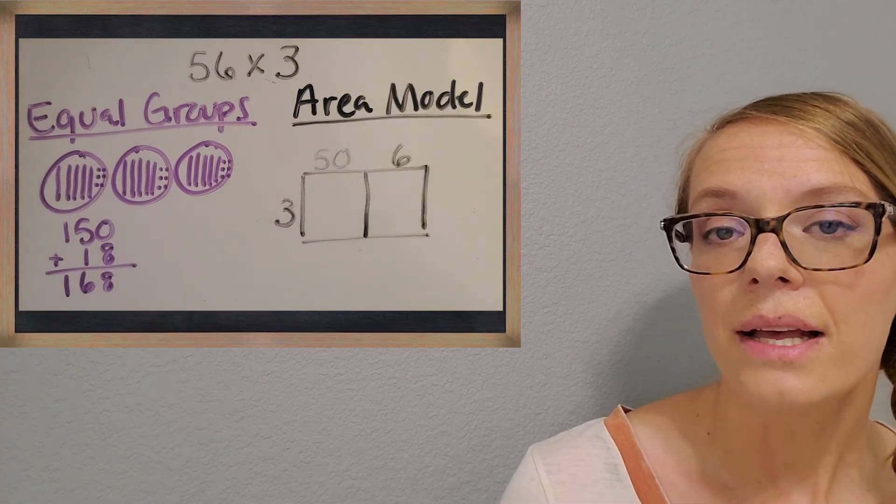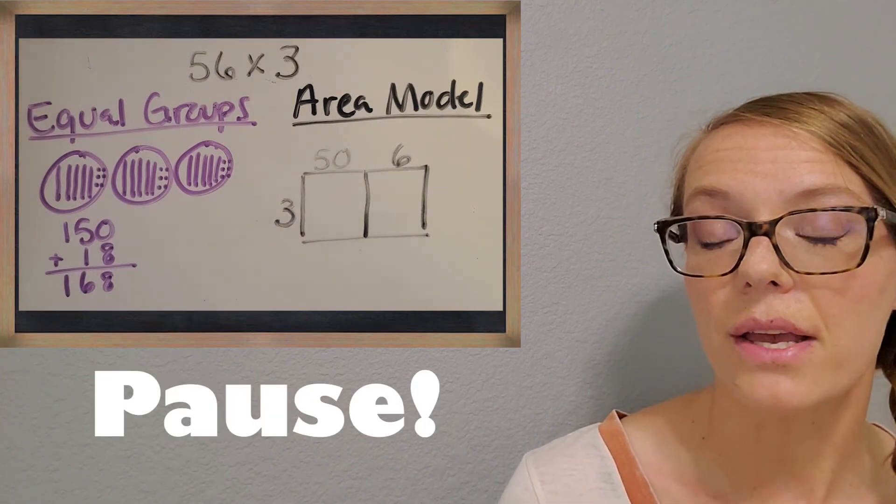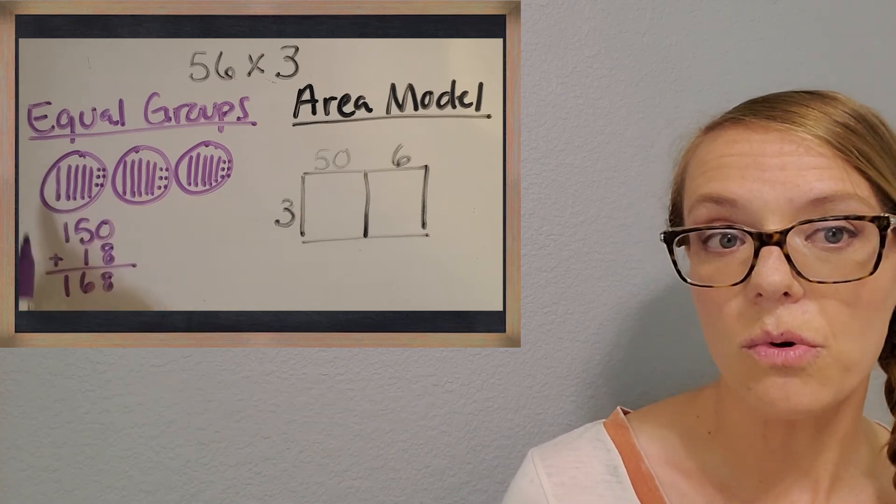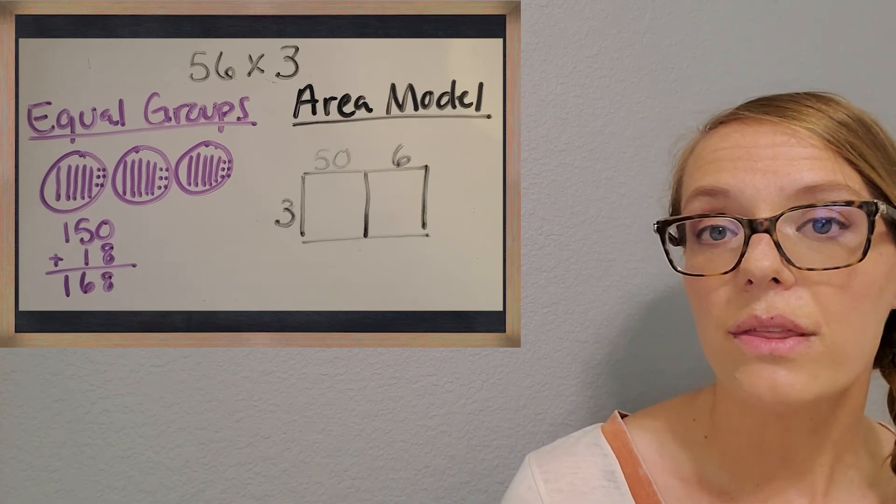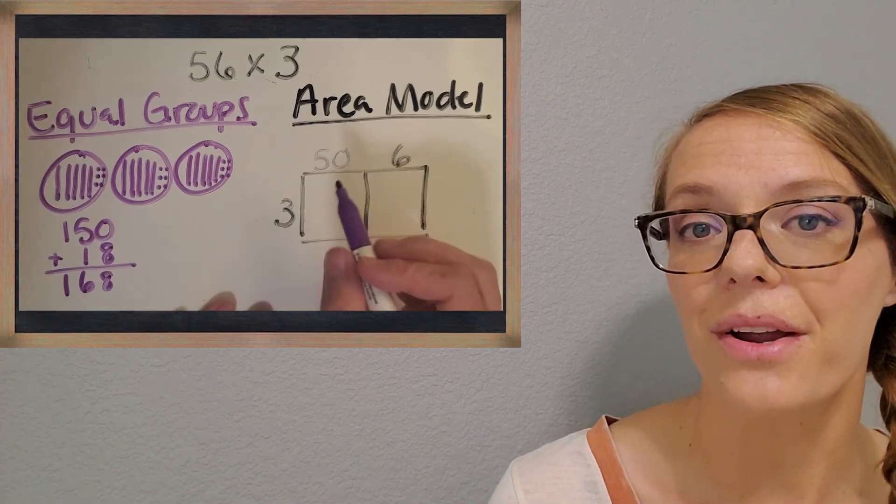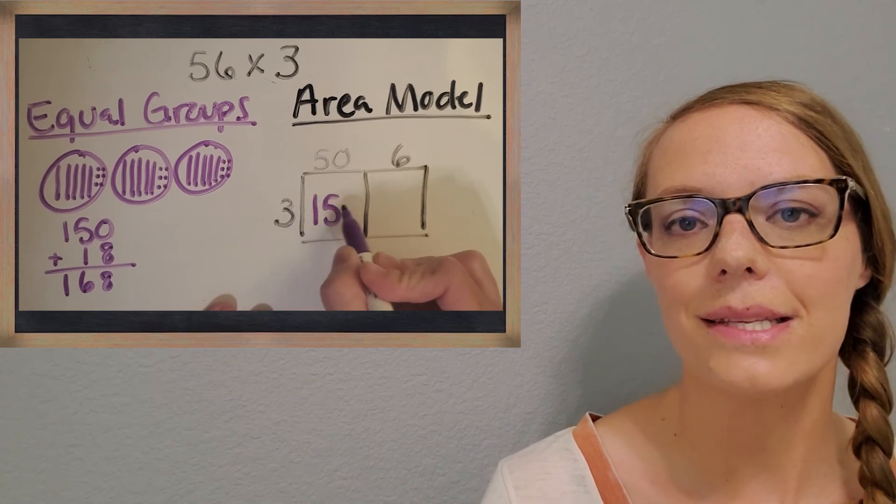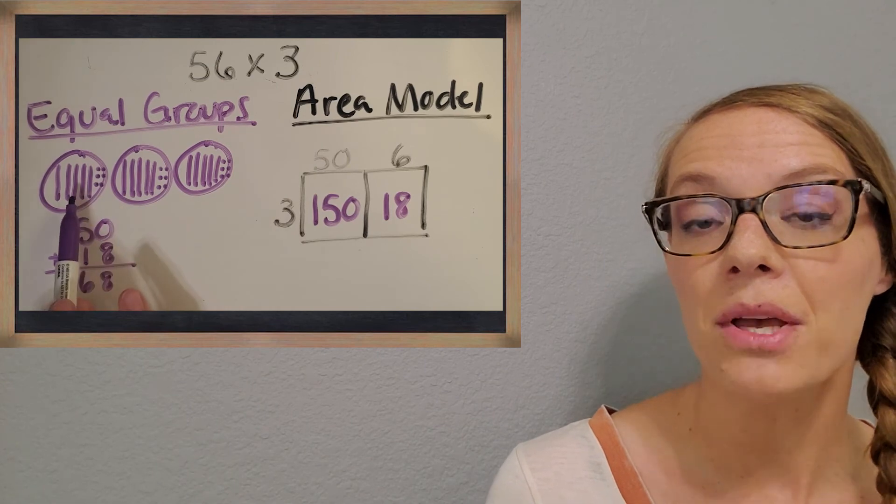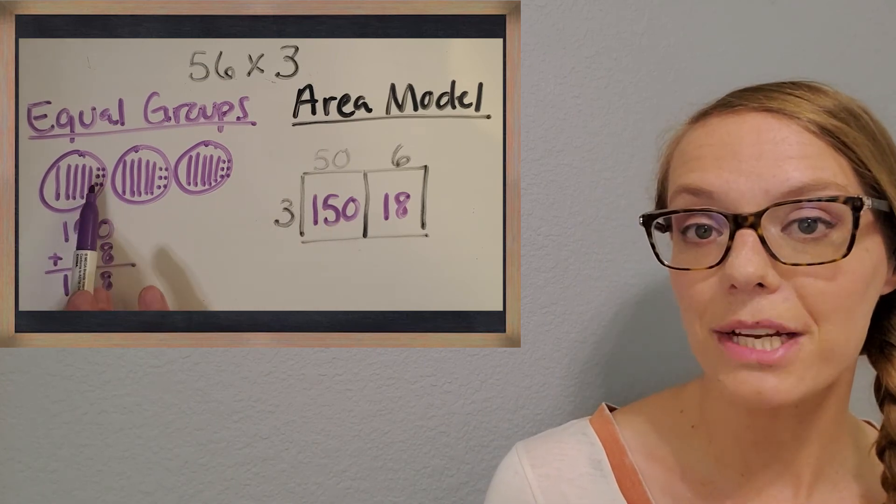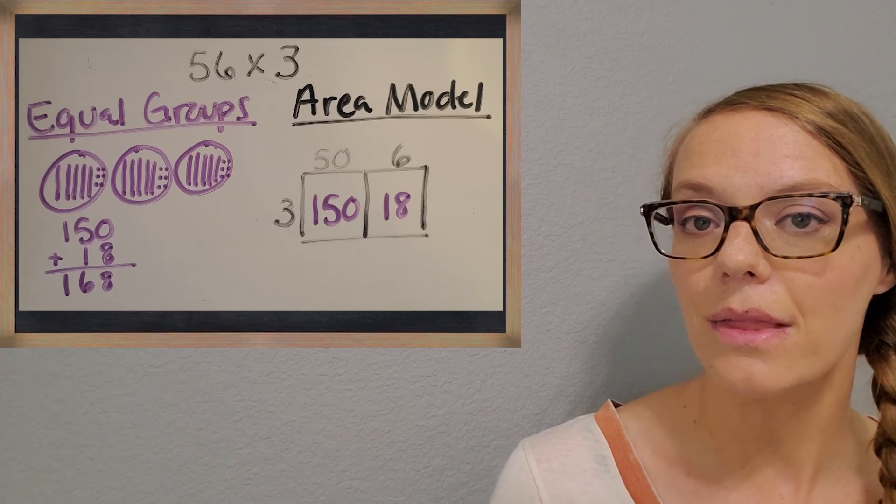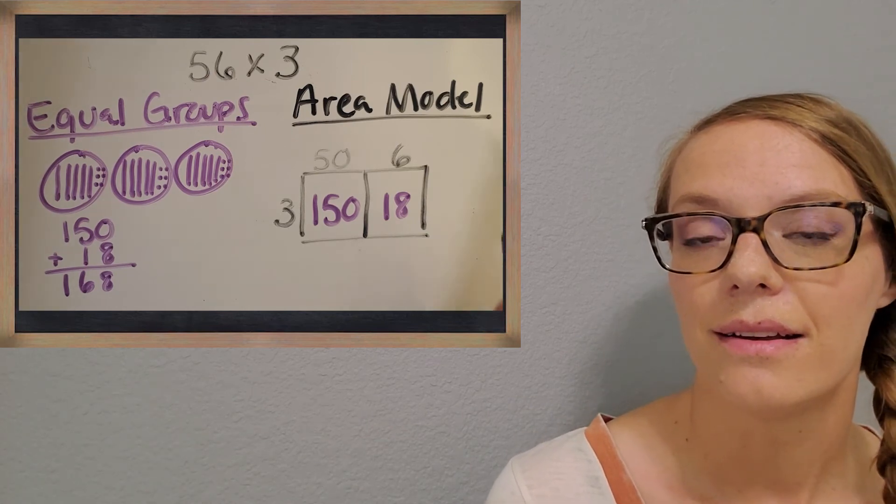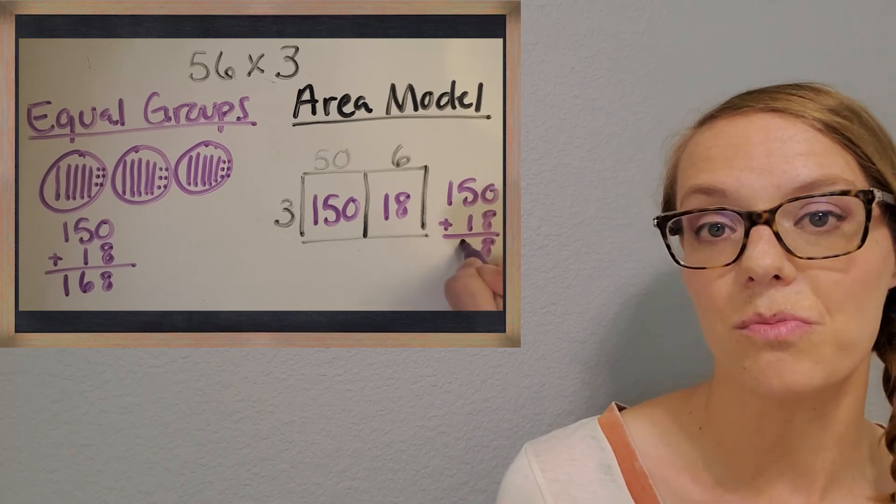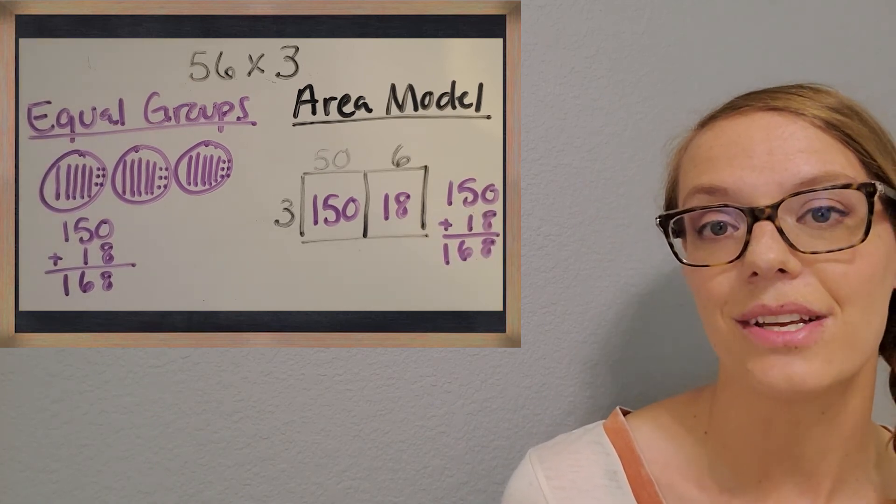Now, let's see if you can pause the video and start this problem. You might want to look at your equal groups to help you with the strategy. And then we'll come back and check our work. All right, see if your work matches mine. I'm also seeing connections again this time between the equal groups picture and the area model. It's so awesome that they go together. So now in this problem also, our total answer is 168. Great job.